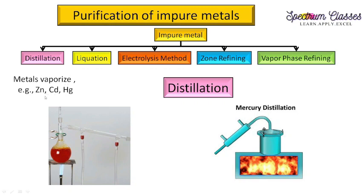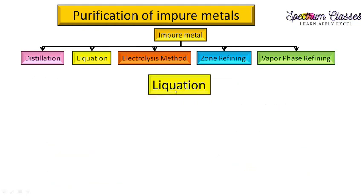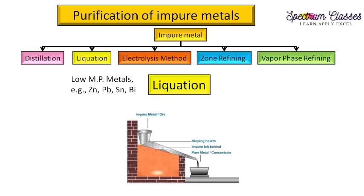The next method is liquation. In this process, the metal gets liquefied. It is applicable to low melting point metals such as zinc, lead, tin, and bismuth. In the assembly, impure metal is fed in from one side through a heating zone. Due to the heat, the metal melts because of its low melting point, while the impurities — which have a high melting point — remain in solid form and are left behind. Pure metal is collected on the other side.